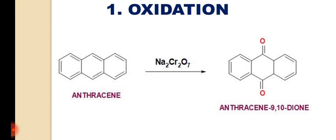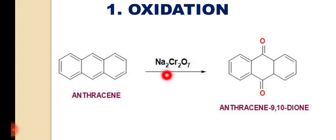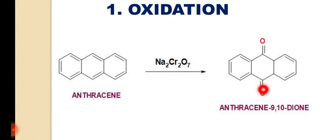The first reaction is the oxidation reaction. Anthracene on reaction with sodium dichromate undergoes oxidation at the 9 and 10 positions to form anthracene-9,10-dione.